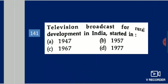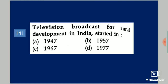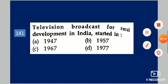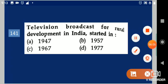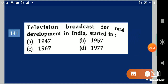Next question: Television broadcast for rural development in India started in dash. Your options are: 1947, 1957, 1967, 1977. Your answer is 1957.